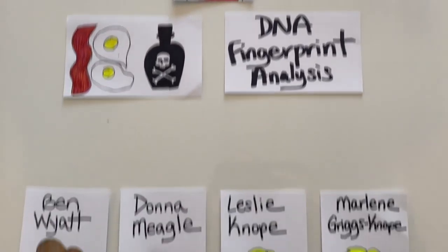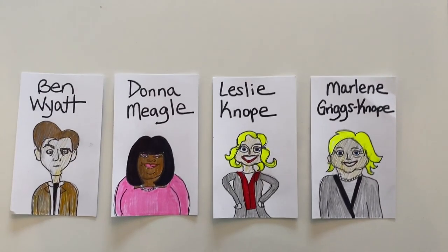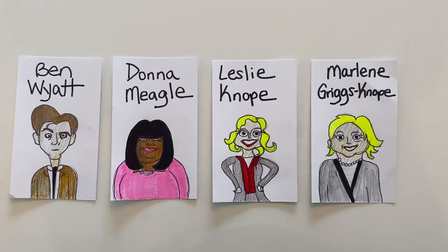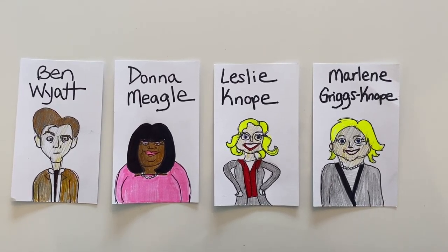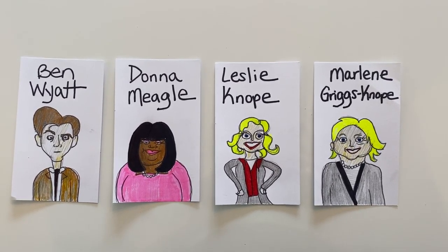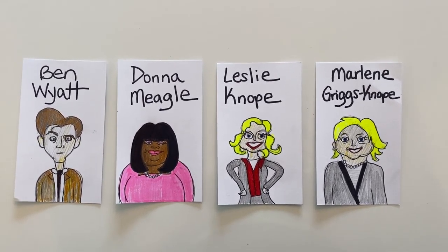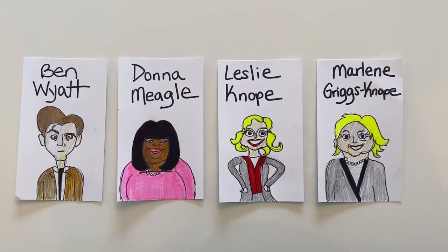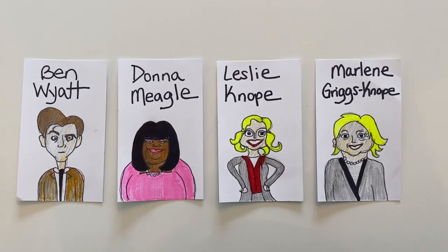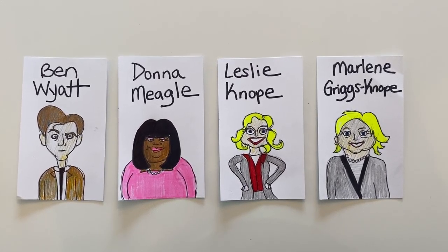They rushed the sample to the lab to perform a DNA fingerprint analysis. Let's look at the suspects: Ben Wyatt, Donna Meagle, Leslie Knope, and her mother Marlene Griggs-Knope are all city employees that had been in the break room that very morning.